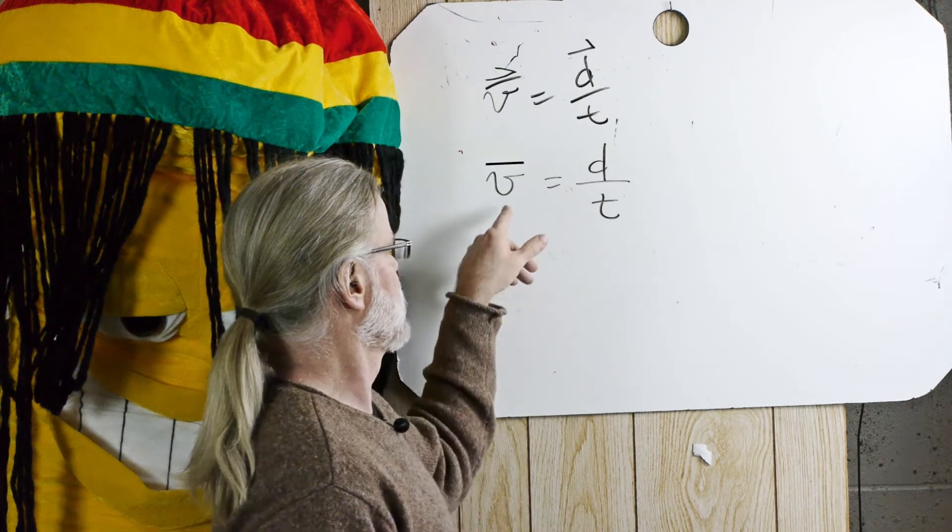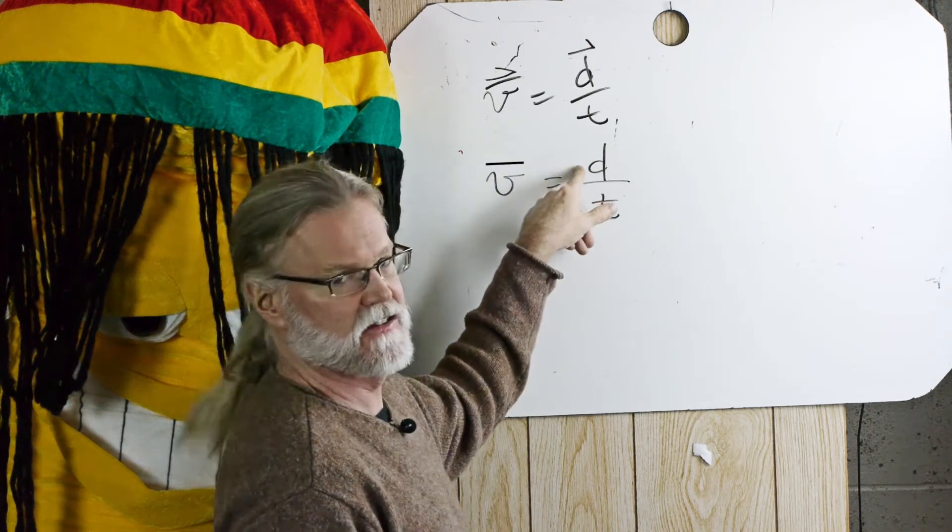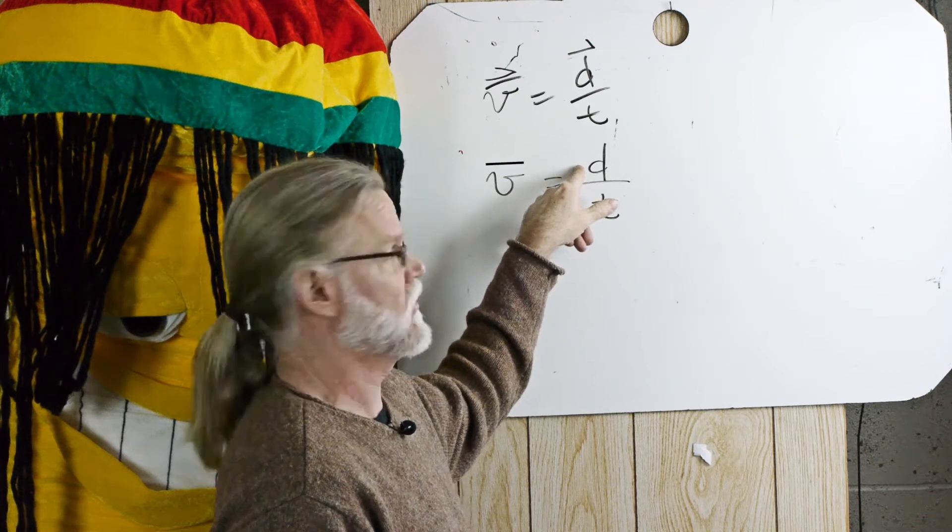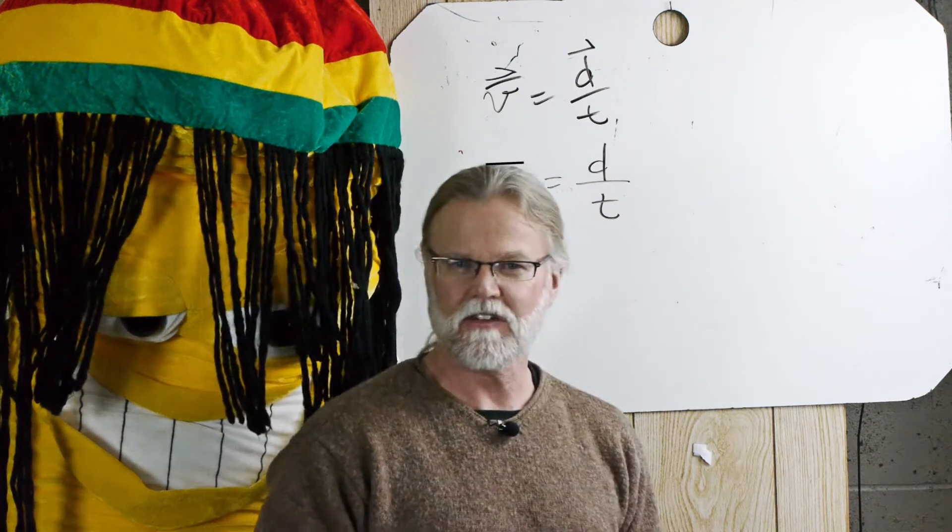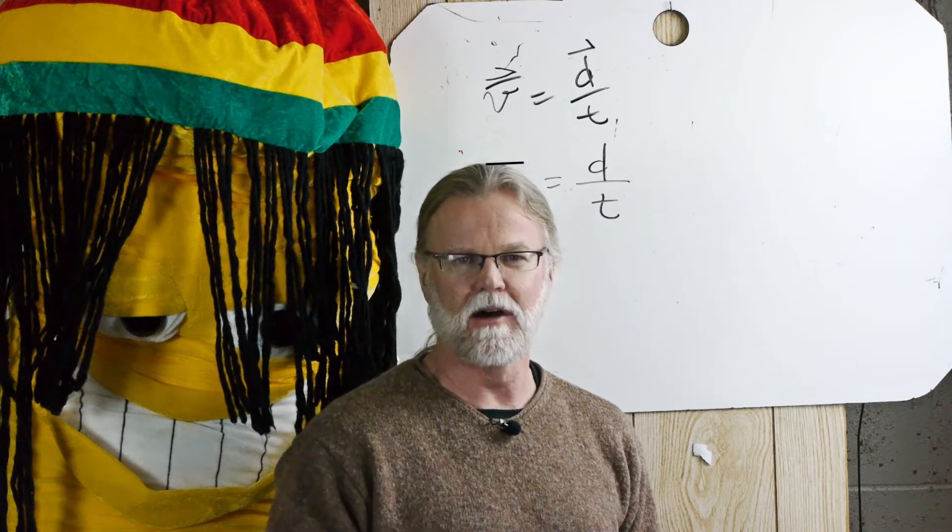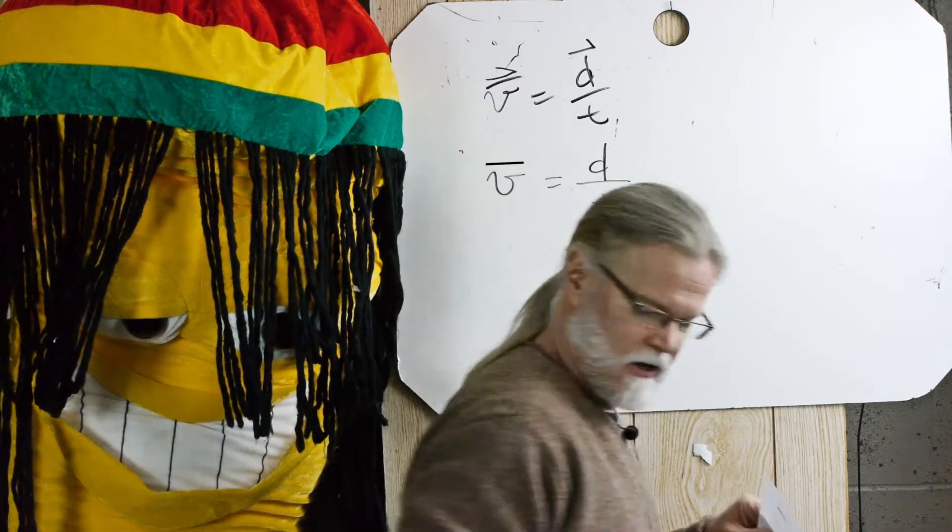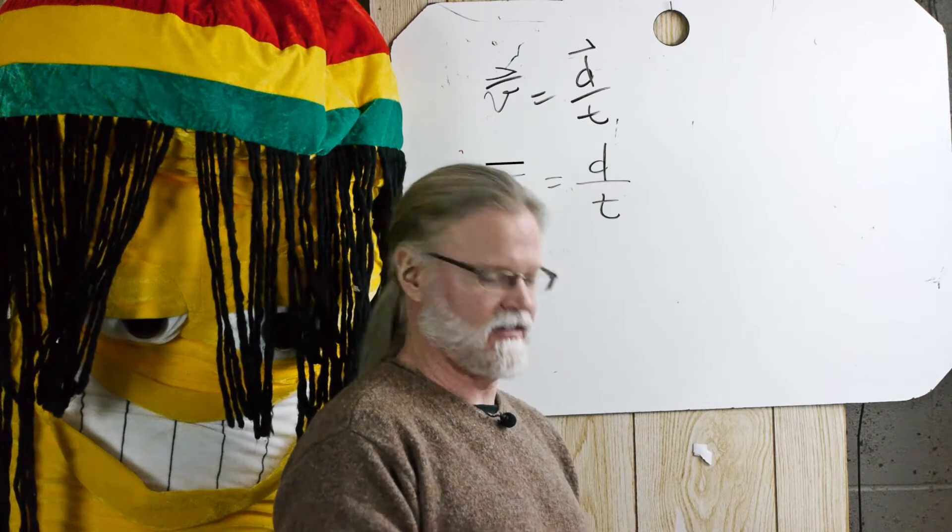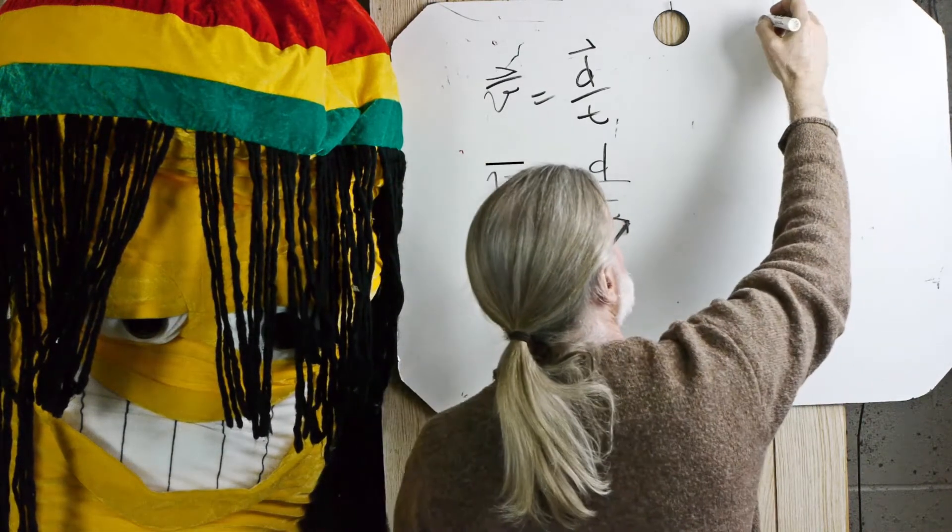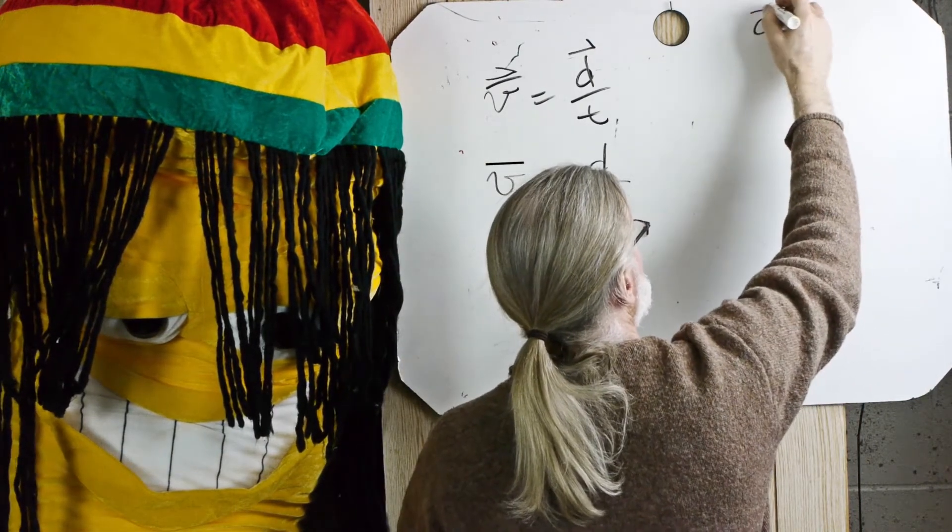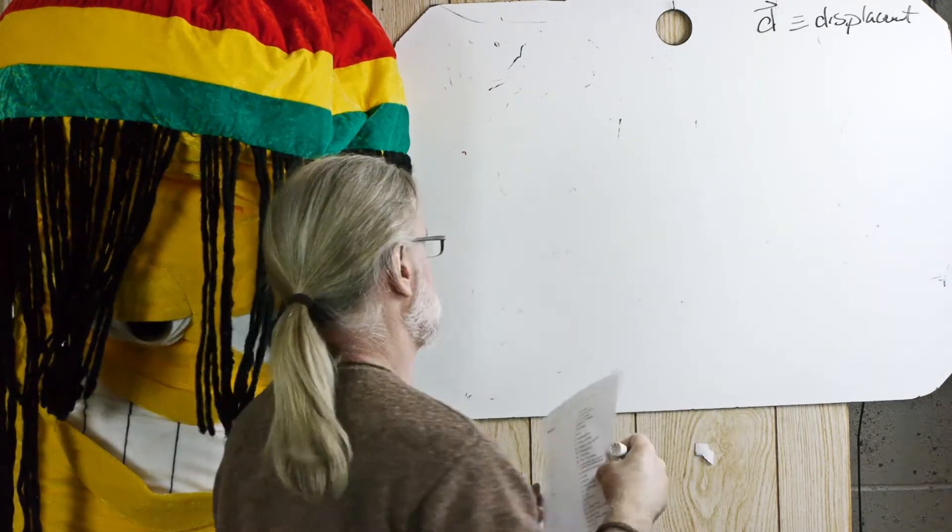So speed equals distance, which is also a scalar, divided by time. So let's take a moment and talk about these different vectors. In order to define velocity, we must first talk about something called displacement. Let me give you an example of a displacement.